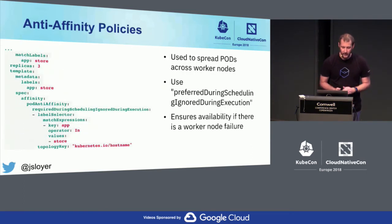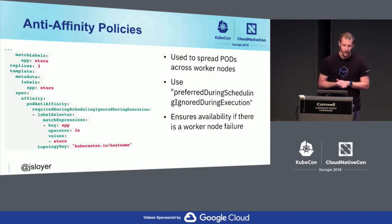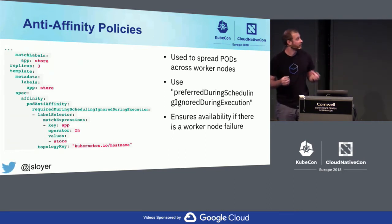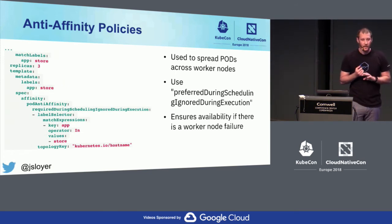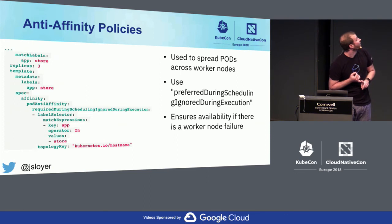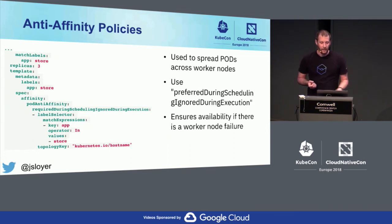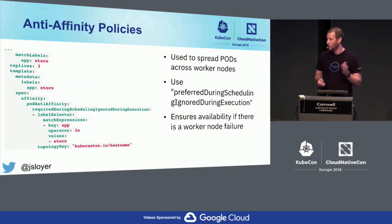Next on the list is anti-affinity. This is something that's really hard to understand but really cool. What it says is: prefer it during scheduling, ignore it during execution. What this means is Kubernetes will respect the topology key and basically put only one instance of, say, Redis on a given node. It will prevent running multiple Redis instances on the same node for performance or reliability reasons. If you have a front door API, you probably don't want all those instances running on the same worker node — things will go down and it's not very reliable.